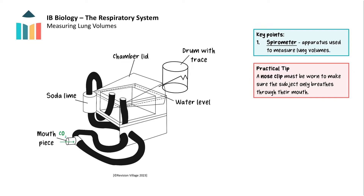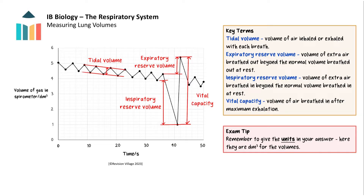In hospitals and research laboratories, computer-based spirometers are used where the computer produces a trace as a person breathes in and out of the mouthpiece. When looking at spirometer traces, check what the y-axis represents — here it refers to the volume of air in the spirometer. As a person breathes in, the volume of air in the spirometer reduces, so when the trace goes down the person is breathing in. As the trace goes up the person is exhaling air back into the spirometer.